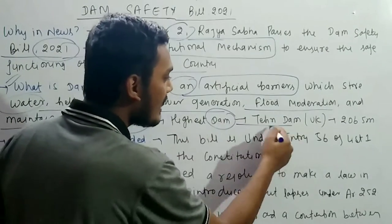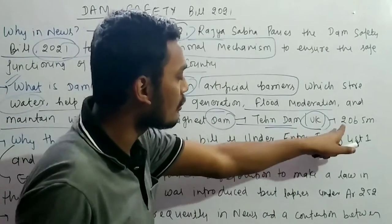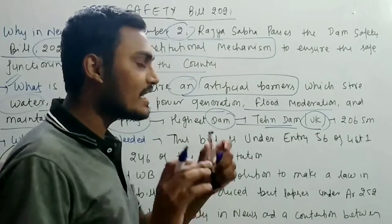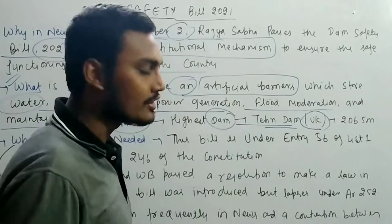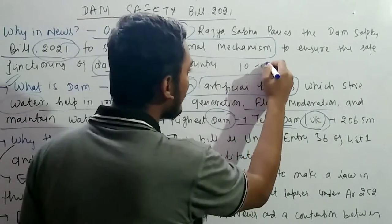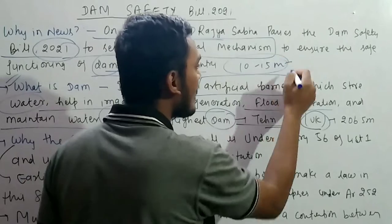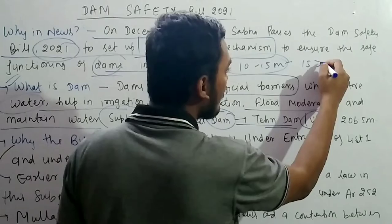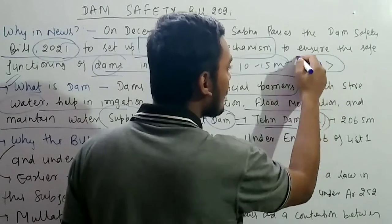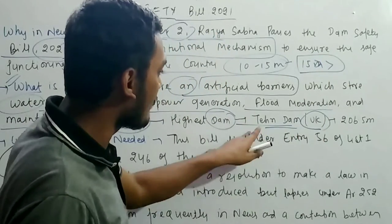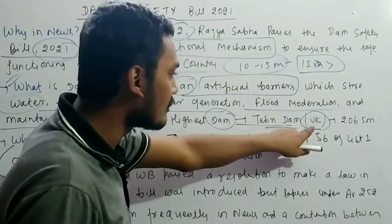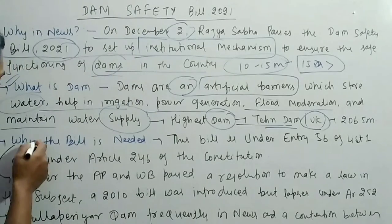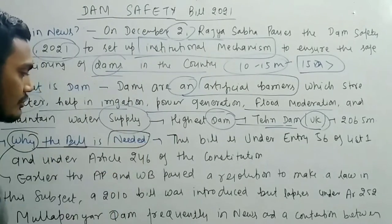The highest dam in India is the Tehri Dam in Uttarakhand, at 206.5 meters. There is also a distinction between large dams and small/medium dams: those between 10 to 15 meters fall under small and medium dams, while anything exceeding 15 meters is considered a large dam. So the largest dam in India is the Tehri Dam in Uttarakhand at 206.5 meters.